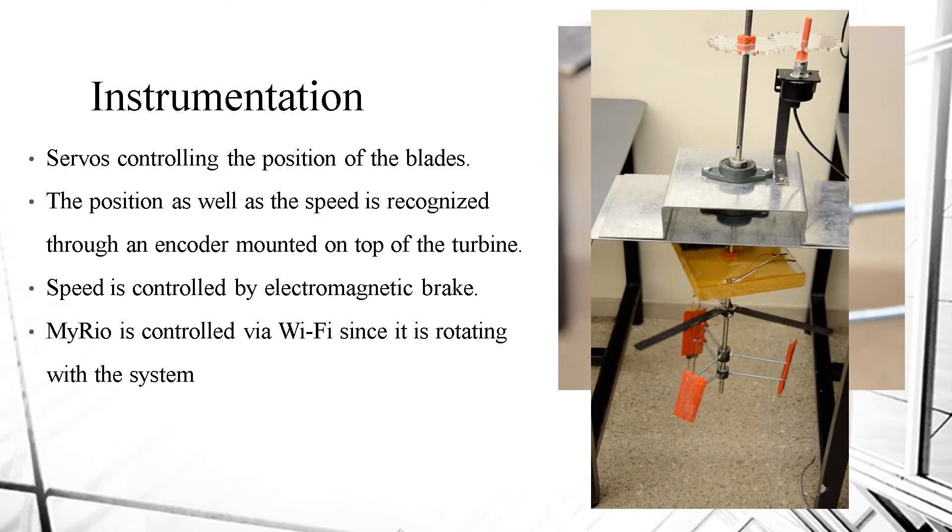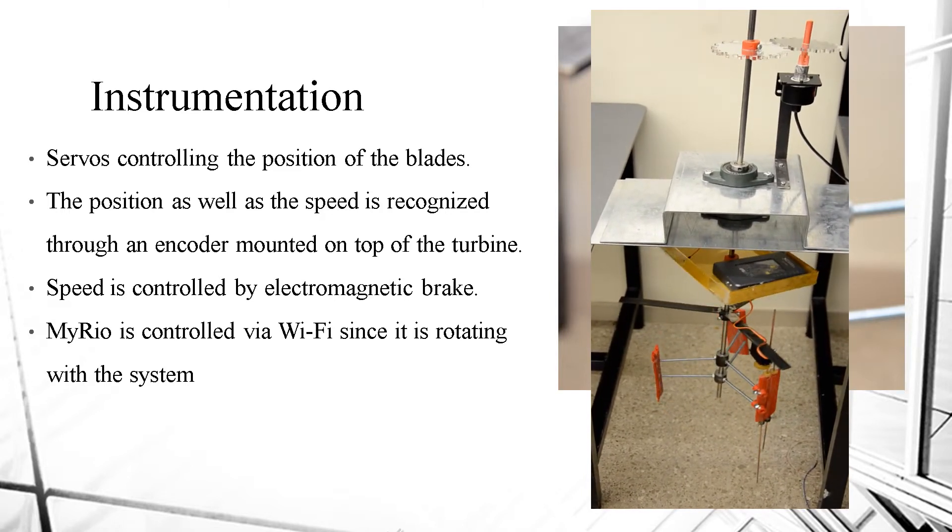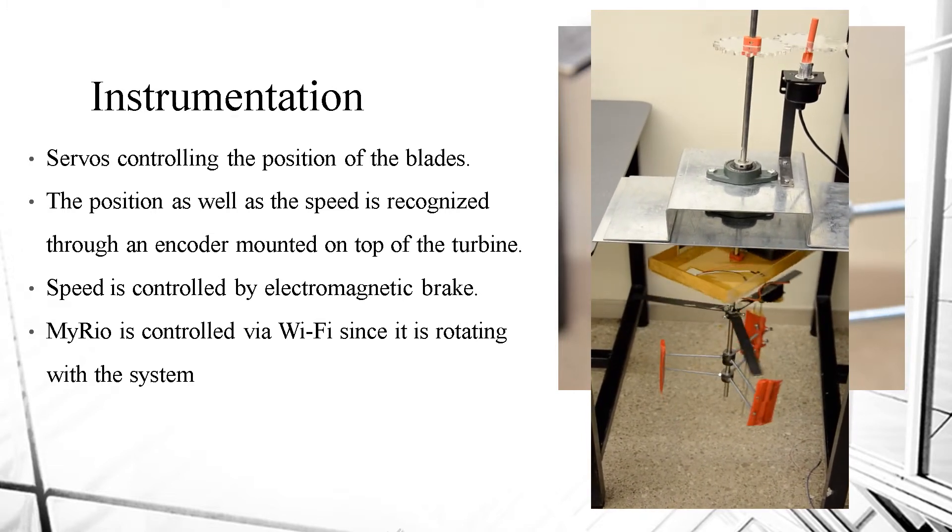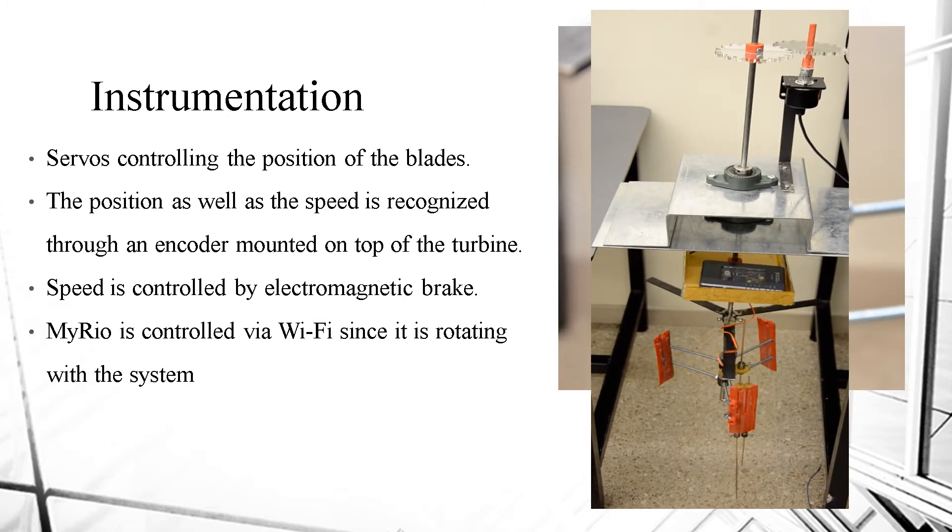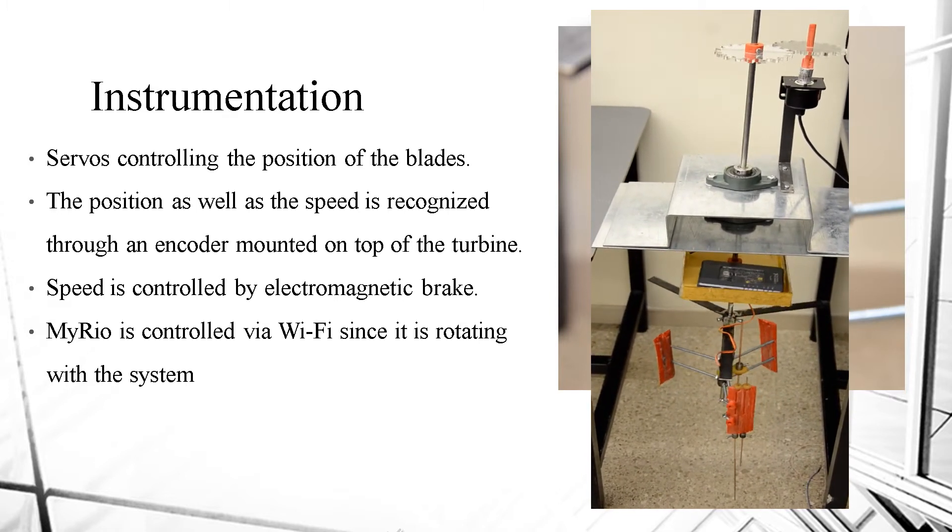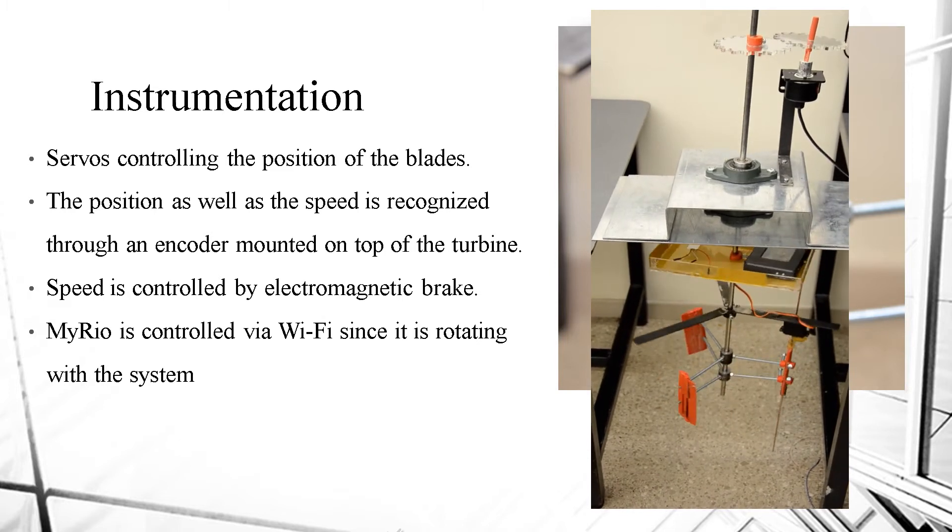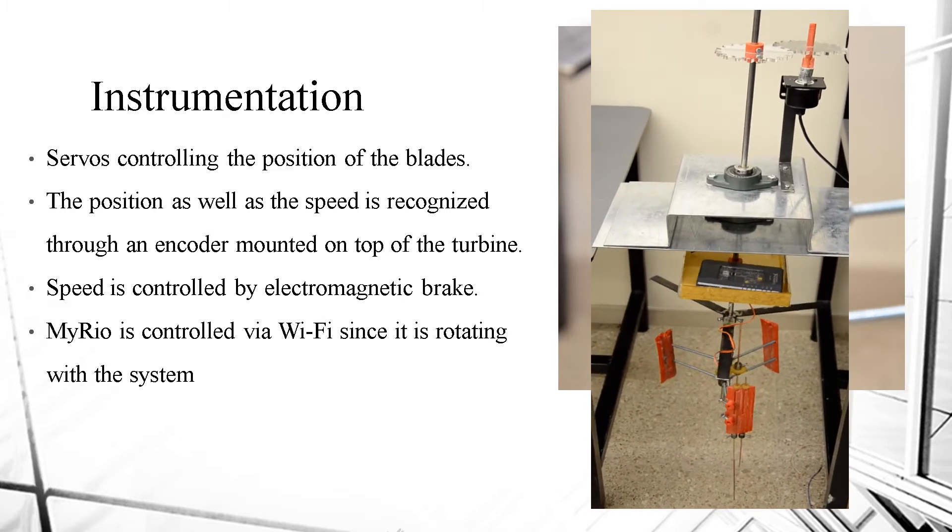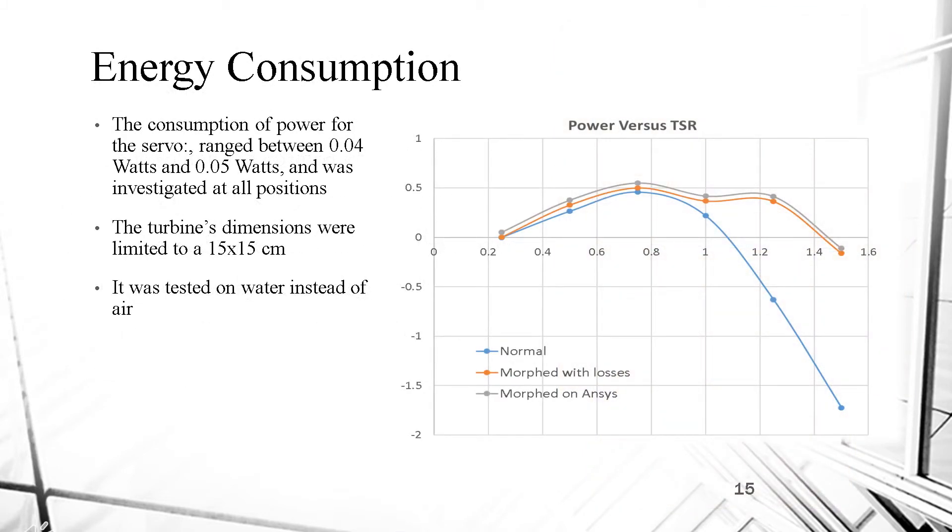Now, moving to the instrumentation and control. The prototype uses servos to control the position of the blades, an encoder mounted on top of the turbine, speed is controlled by electromagnetic brake, and a torque sensor mounted to the shaft. These actuators and sensors are programmed via National Instruments myRIO. You can see in the video a basic prototype displaying the gears, blades, and actuators. Since the experiment hasn't been accomplished, we did a rough estimation of the power losses consisting of the servo losses. It turned out that after running it, about 3mW was consumed by the servos, whereas the optimized turbine was supposed to generate 0.4W and the normal one 0.313W, so a total of 27% in the turbine power has been accomplished.